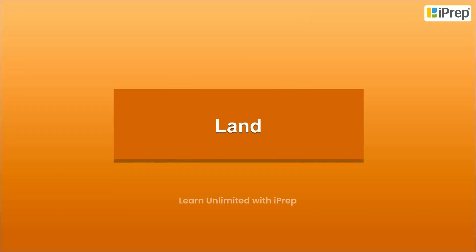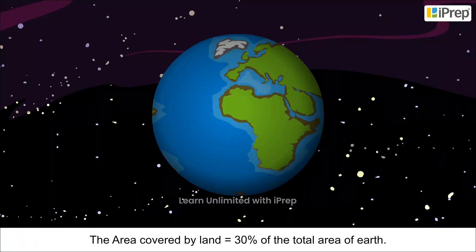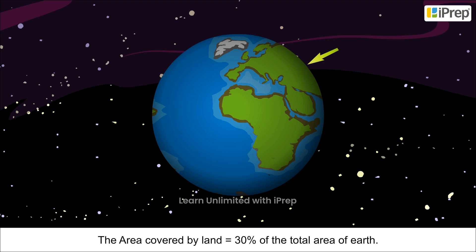Land. The area covered by land is 30% of the total area of Earth.